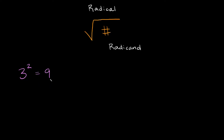But what if I started on this side instead? So let's start with 9 this time, and let's say I wanted to know what is the square root of 9. Well if I'm taking the square root of 9, all I'm asking is: what number times itself is equal to 9? Well that would be equal to 3, because 3 times itself is equal to 9. So the square root of 9 is equal to 3 — just 3. It's not 3 times 3, it's not 3 squared, it's just 3.